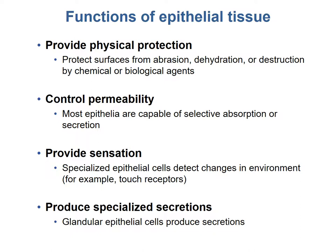The functions of epithelial tissue are as follows. First, it provides physical protection, typically to prevent surface abrasion, dehydration, or destruction by chemical or biological agents. It controls permeability, as many epithelial cells are capable of selective absorption or secretion, controlling what moves through the cell. Epithelial cells provide sensation — specialized epithelial cells can detect changes in the environment, such as touch receptors in the skin. Finally, epithelial cells produce specialized secretions, with glandular epithelial cells producing secretions for exocrine or endocrine function.